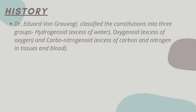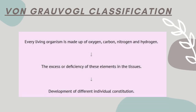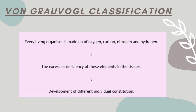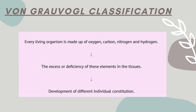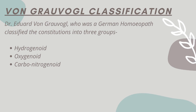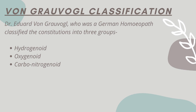We will discuss about the classification given by von Gravigel. According to Gravigel, every organism is made up of oxygen, carbon, hydrogen, and nitrogen. Deficiency or excess of any of these elements leads to development of a different constitution. Dr. Edward von Gravigel, who was a German homeopath, classified the constitutions into three groups: hydrogenoid, oxygenoid, and carbonitrogenoid constitutions.